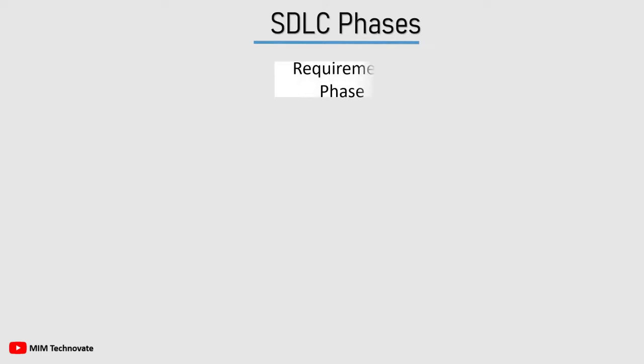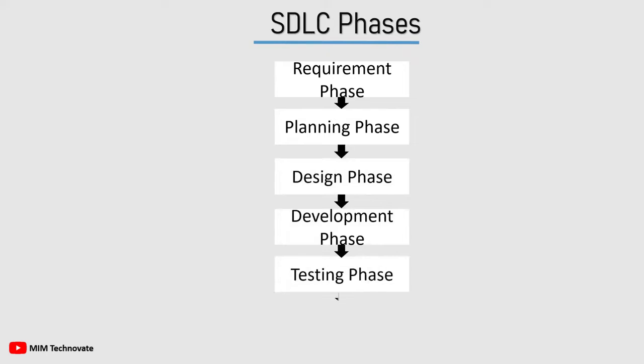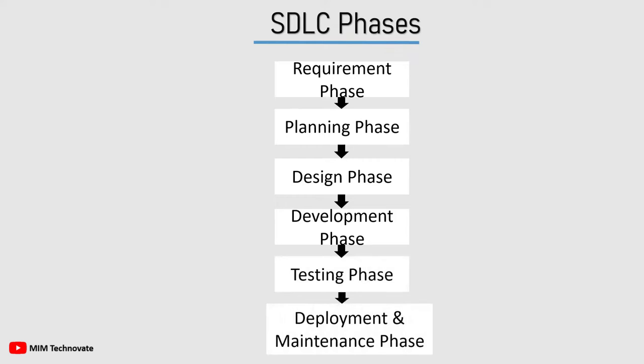The 6 phases of SDLC are: Requirement Phase, Planning Phase, Design Phase, Development Phase, Testing Phase, and Deployment and Maintenance Phase. Let's study them in detail with definition and example.